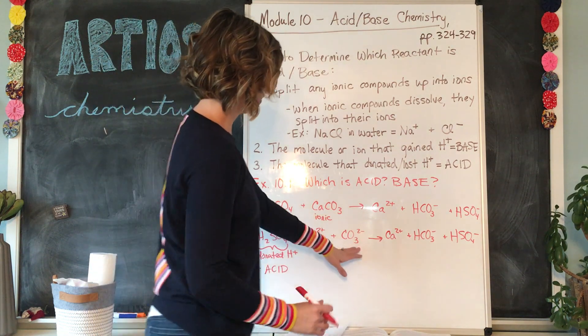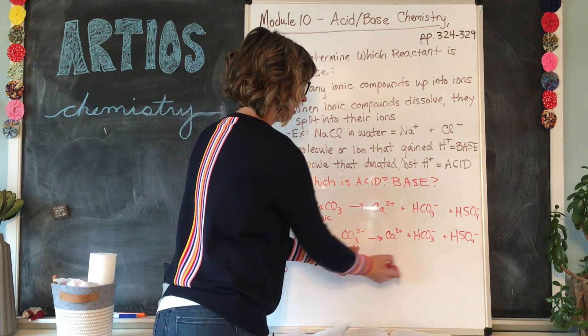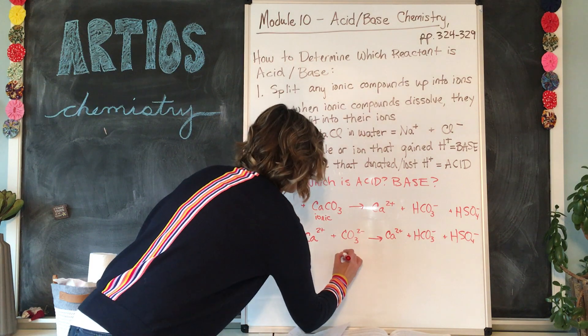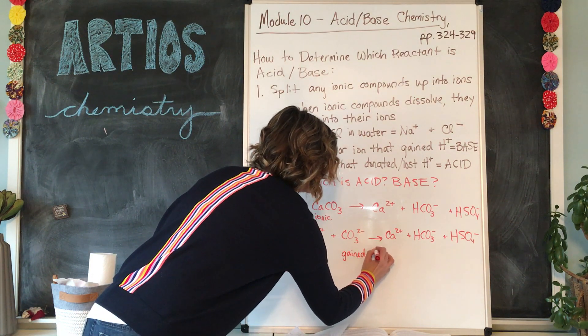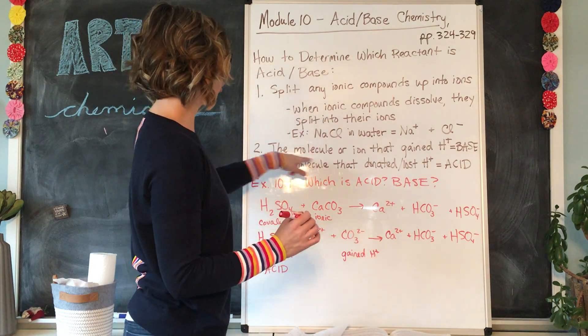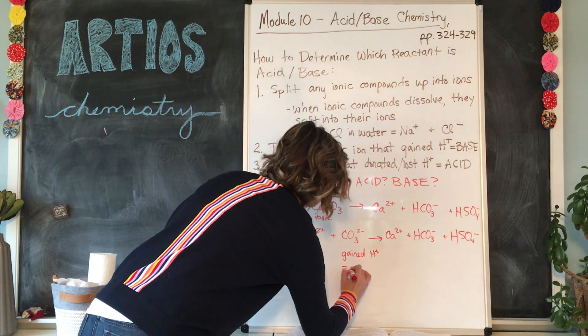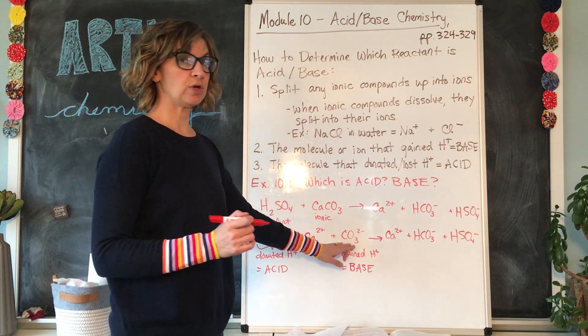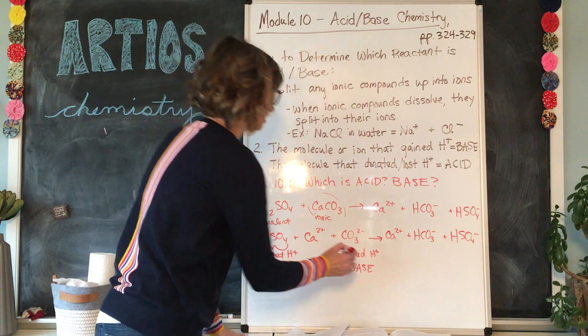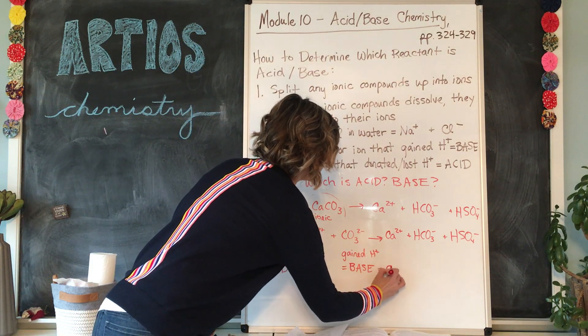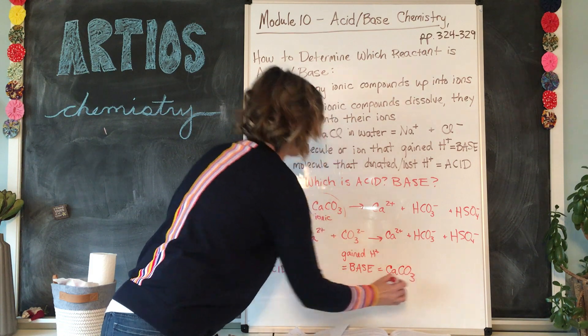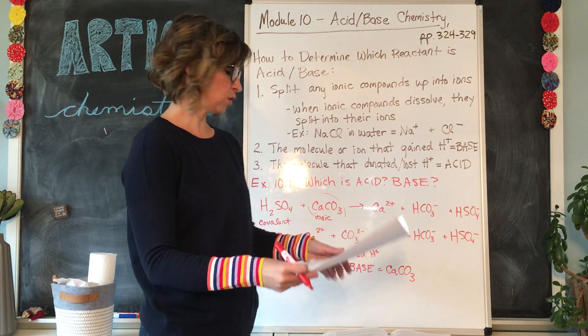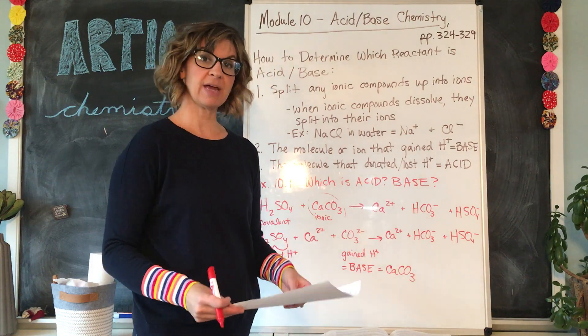And we can see here that the CO3 2- became HCO3-. So it gained an H+ ion. Gained or accepted H+, making it according to rule number two, the base. Now what is the base? Is it just the CO3 2-? Well, it's actually the molecule that it started from, which is right here. So the base equals CaCO3 was the base because you have to look at what actually started in the reaction. The compound from which it came was CaCO3, which is the base.